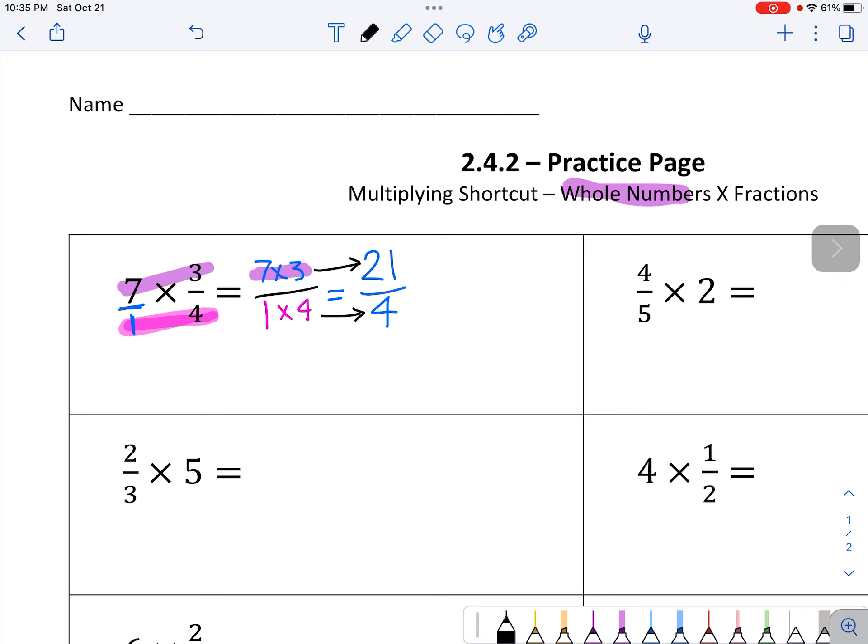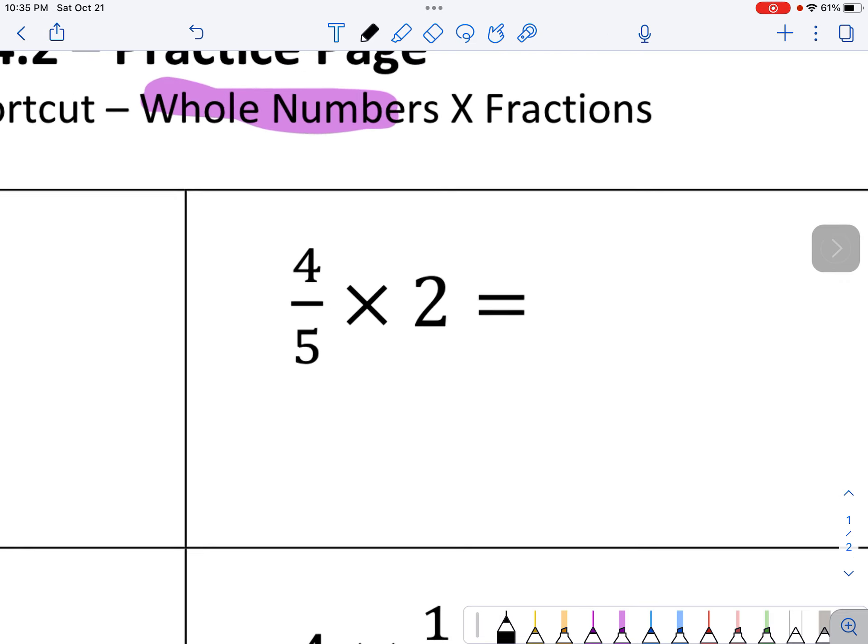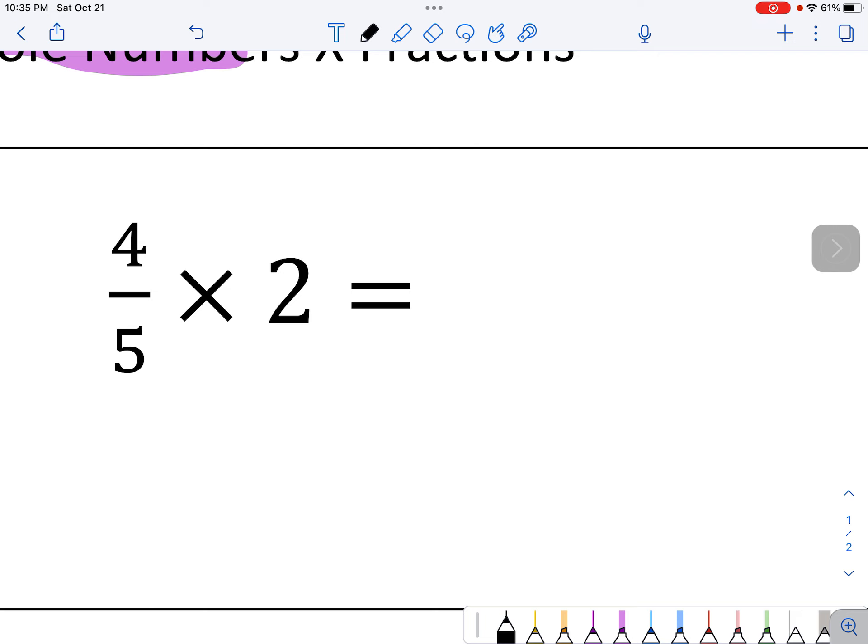Okay, so we'll do that one more time. We'll do the one right next to it. 4 fifths times 2, or 4 fifths of 2. It's a little bit tricky to think about what fifths of 2 might mean. So to make it a little easier for us, underneath the 2, we're going to put a 1. So that's 2 over 1. This right here, remember, the way we would read that is 2 wholes.